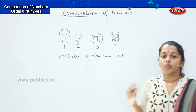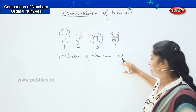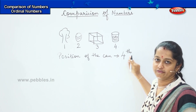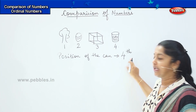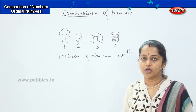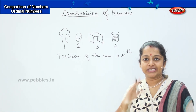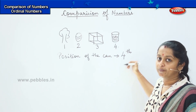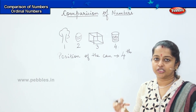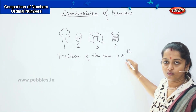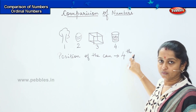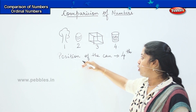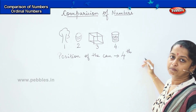So children, whenever we write the position of an object, we will not write it just by the number. We will add the suffix on top of it in order to tell the position of that particular object. When we say any number, we say one, two, three, four. But when we tell the position, we have to be specific. So we won't say 'four,' we will say 'fourth.' The position of the can is in the fourth place.